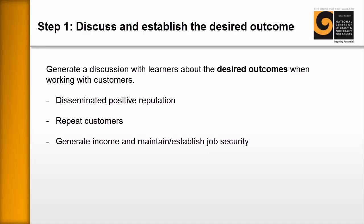There are short-term outcomes which are usually driven by emotion and self-defense, and then there are long-term outcomes which might be related to achieving higher-level goals. For example, the desired outcomes when working with customers might include: a disseminated positive reputation — you want customers to go out and tell their friends how great the experience was. Number two, repeat customers — you'd want those same customers to come back again. And finally, the ultimate desired outcome is to generate income and maintain or establish job security. As we'll go on, we'll begin to see that short-term goals and long-term goals are sometimes in contrast.